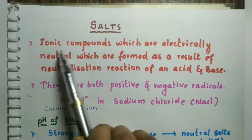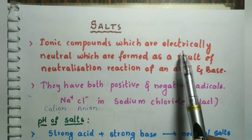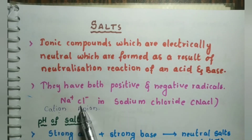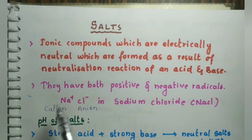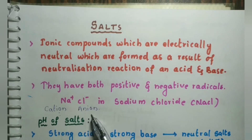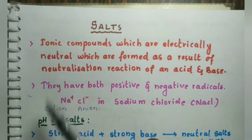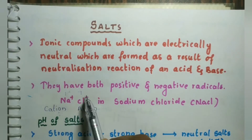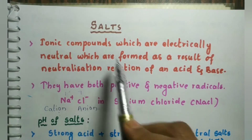Ionic compounds are made up of ions and are electrically neutral. For example, sodium chloride is made up of Na+ and Cl-. Na+ is the cation (positively charged radical) and Cl- is the anion (negatively charged radical). Since there is one positive and one negative charge, they cancel out — the total charge on NaCl is zero, so it is electrically neutral.